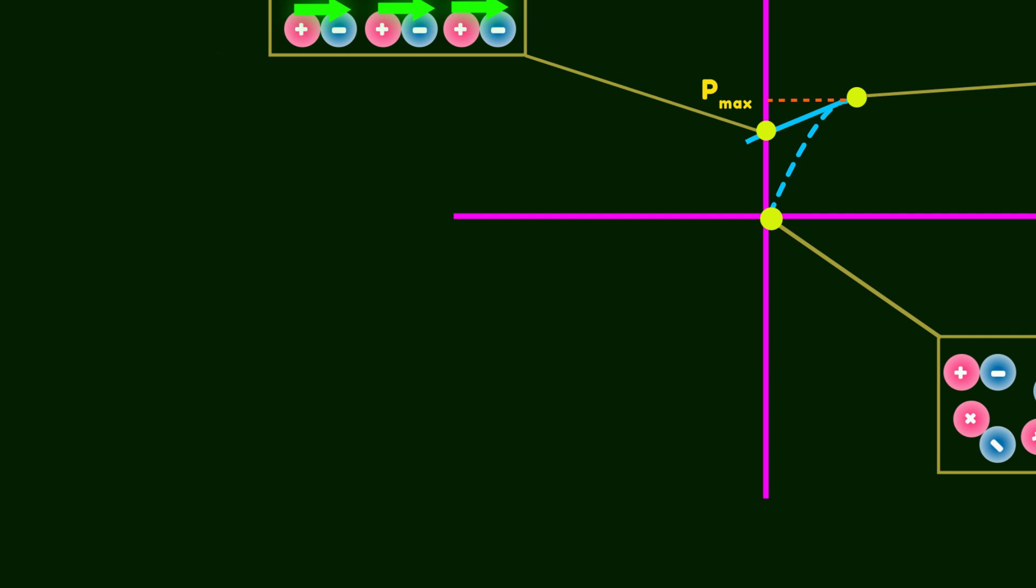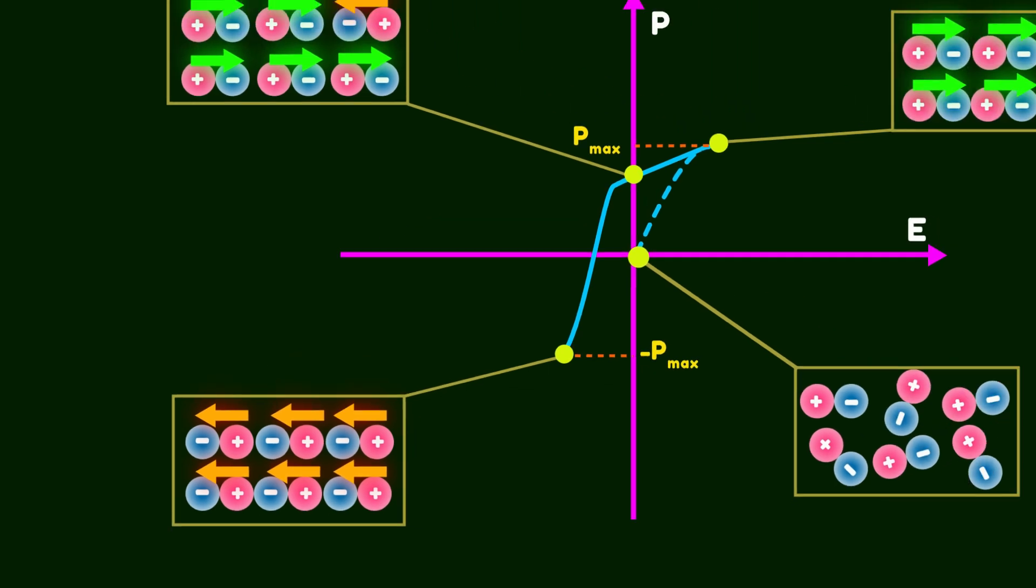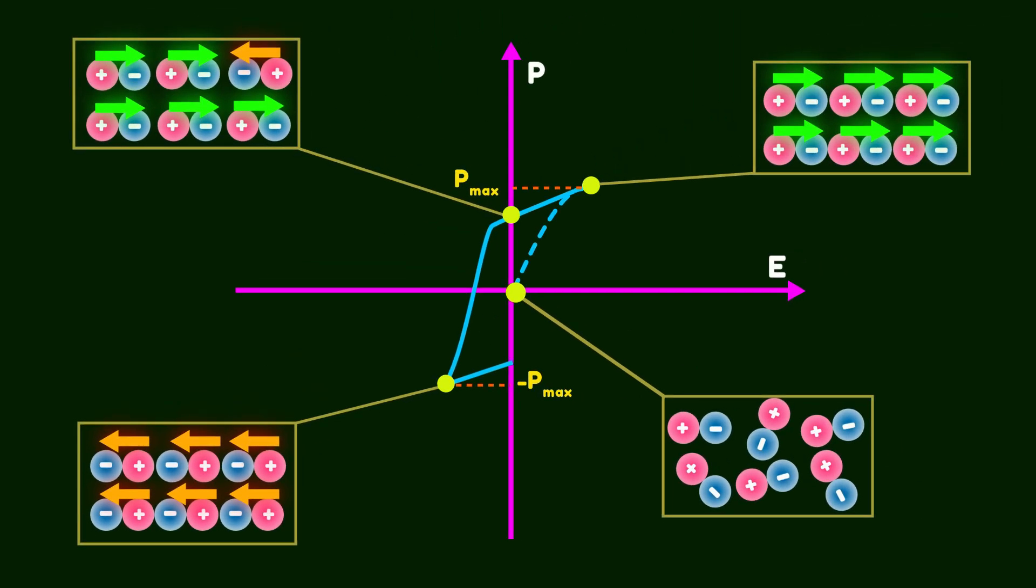Now let's increase the electric field again, but this time in the opposite direction. At some point, we again reach maximum polarization. This is another important feature of ferroelectrics, that it can be polarized reversibly. If we reduce the field back to zero once again, the compound is still polarized. By further increasing the electric field in the original direction, we again reach maximum polarization. Altogether, this cycle produces the hysteresis loop of ferroelectric materials.